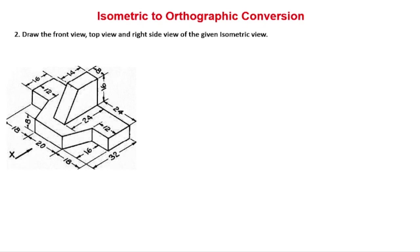Hi friends, once again welcome to John's Emil Academy. Today we are doing isometric to orthographic conversion — we have a 3D figure and we need to generate multiple 2D views: front view, top view, left side view, and right side view. These are all 2D orthographic views.